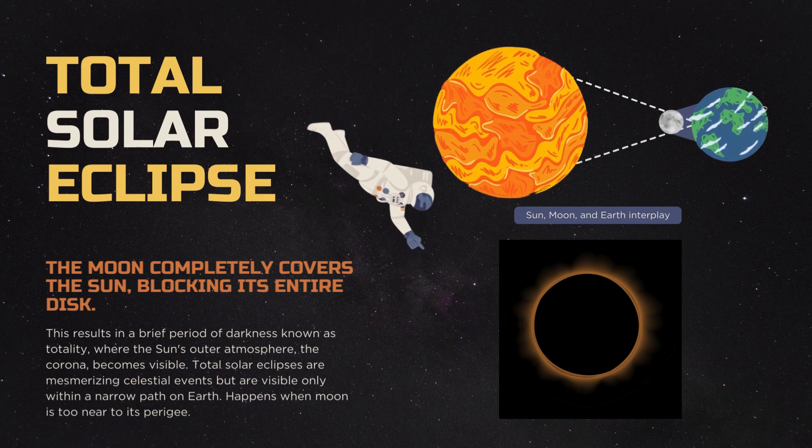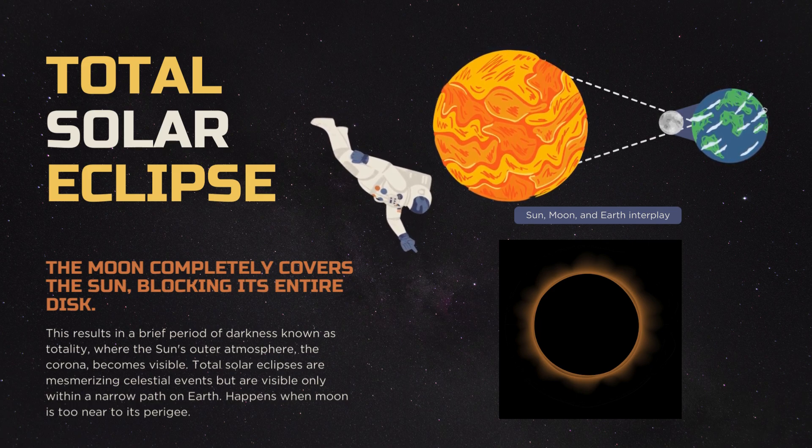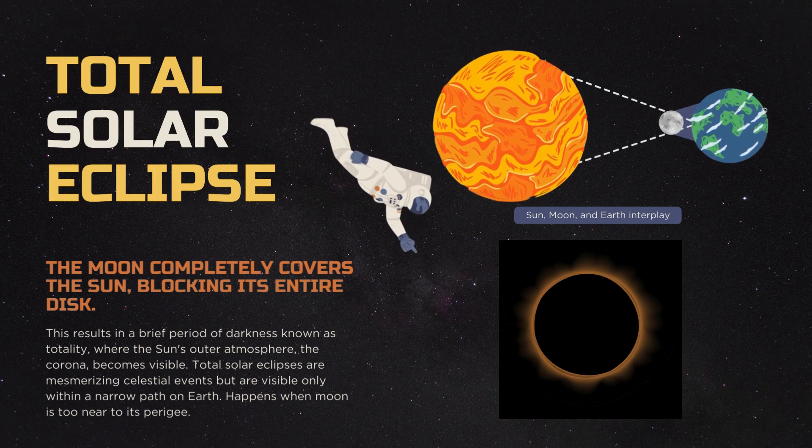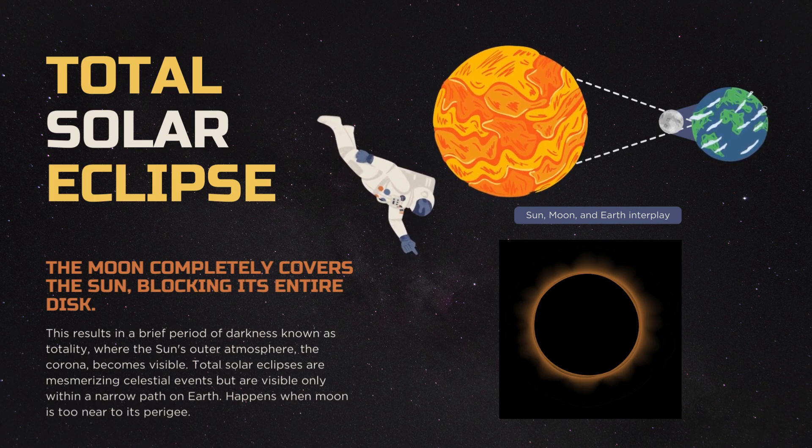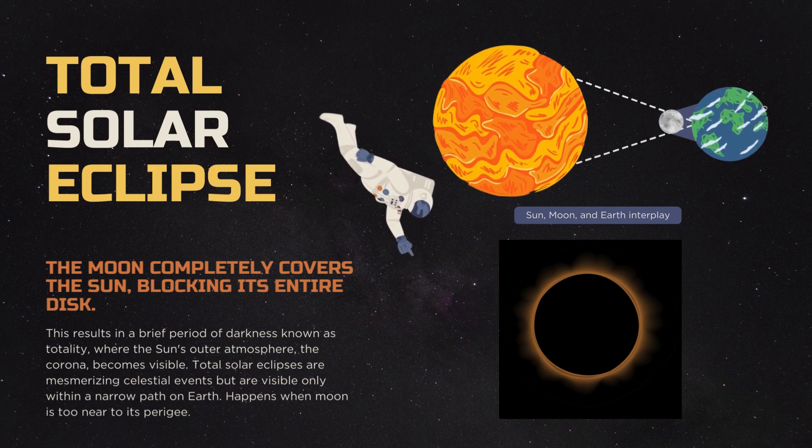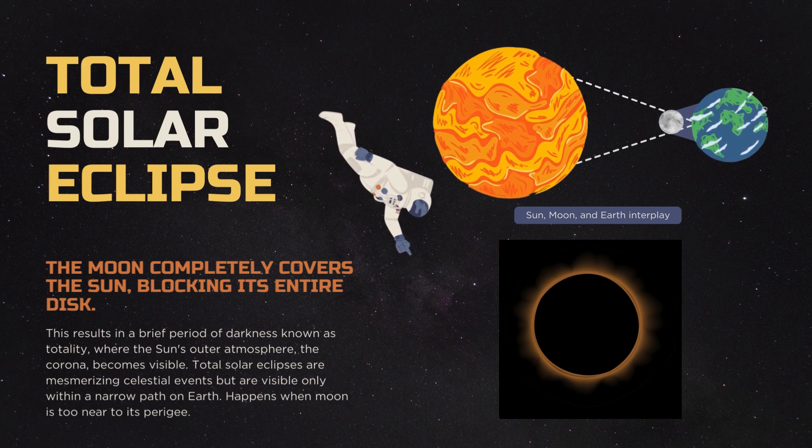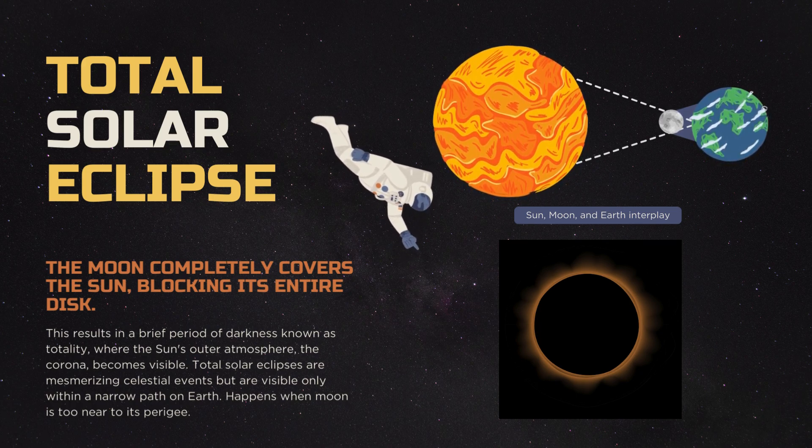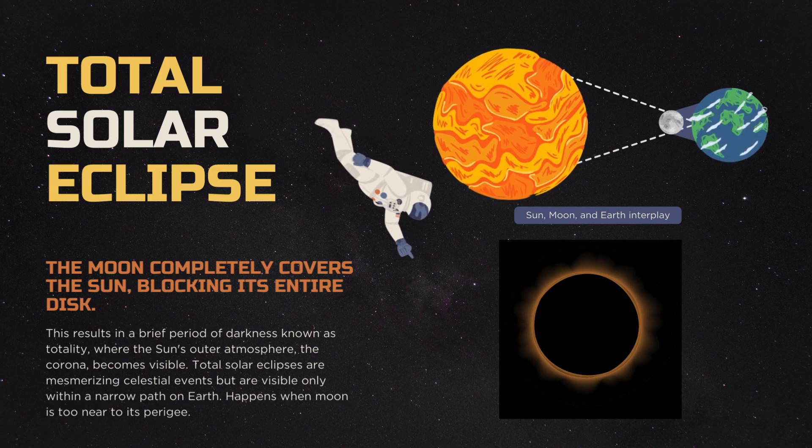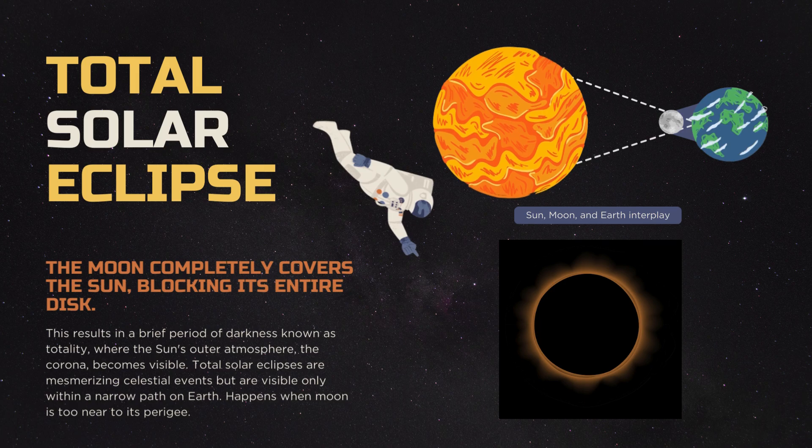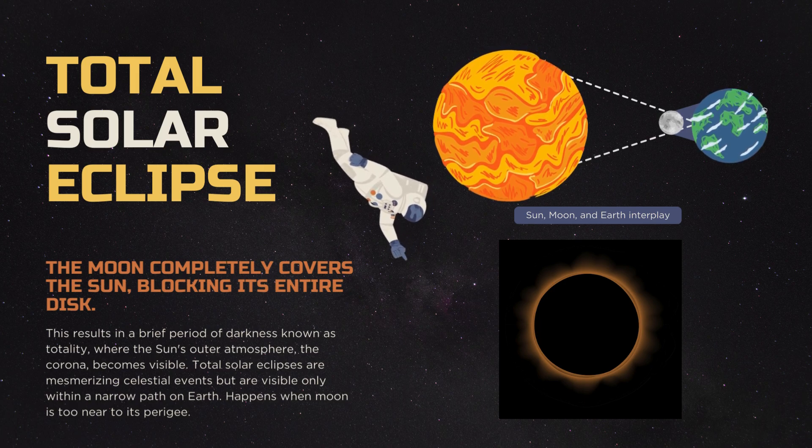This happens when the moon is too near to its perigee. So this is when the total solar eclipse will occur, when the moon is too near to its perigee. As you see in this picture, the moon is too near to earth - that is the perigee point. So from earth, it is seen that it's completely covering the sun. So that is what a total solar eclipse is, and April 8 is a total solar eclipse.